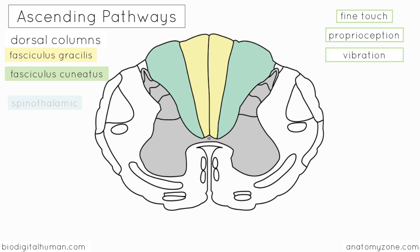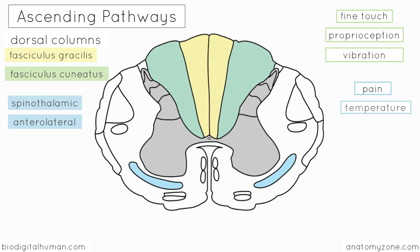Next we have the spinothalamic tracts, highlighted in blue. The spinothalamic tracts are also known as the anterolateral tracts, as they sit anteriorly and laterally in the spinal cord. Some texts refer to distinct anterior and lateral tracts, but almost invariably there is some intermingling of fibres between them, so on this diagram they're represented as one tract. The anterolateral tract relays information to the somatosensory cortex regarding pain, temperature, and crude touch. The lateral aspect carries pain and temperature, whereas the anterior spinothalamic fibres carry crude touch information.